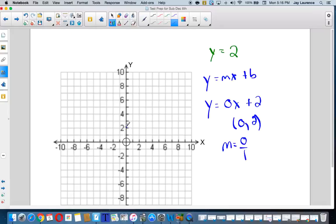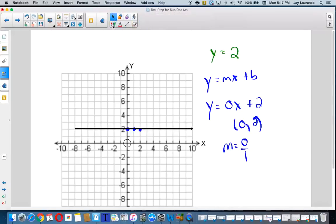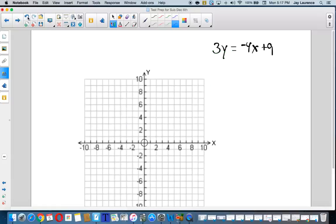So I'm going to graph 0, 2. And then I'm going to rise 0, run 1. Rise 0, run 1. And look at that. I get a nice horizontal line. Notice I didn't say a straight line. Because all lines are straight. And slap an arrowhead. Where'd you go? Slap an arrowhead on there. Okay. I think there's one more problem here.